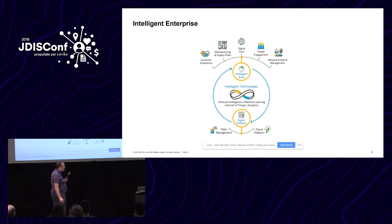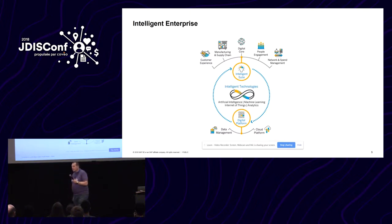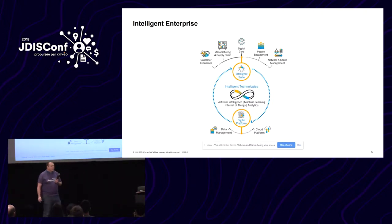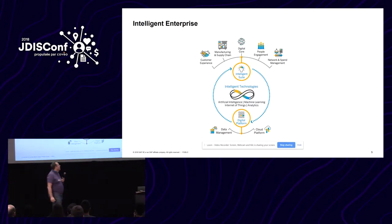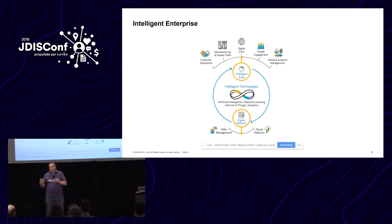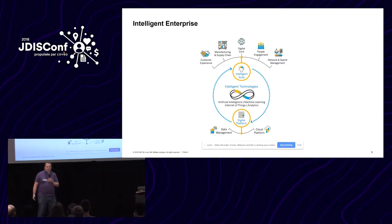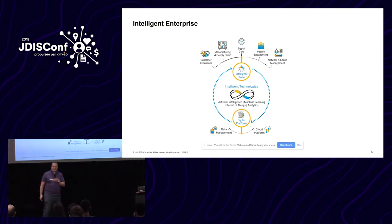We have business network and spend management — what it is, is we have different supplier networks. We have travel cost management with Concur. We have contract workers and I don't know how many trillions of dollars run through this network — like a few million companies doing their business across it. And this is all based on the digital core, which has finance and all the core back-end functionality, all redone over the last years based on SAP HANA, doing all this real-time analytics, much more data-driven than before.